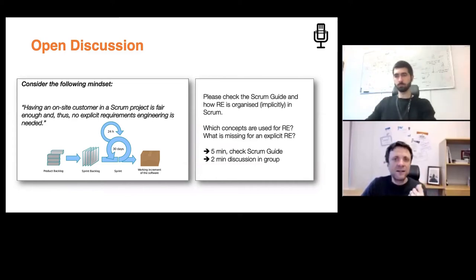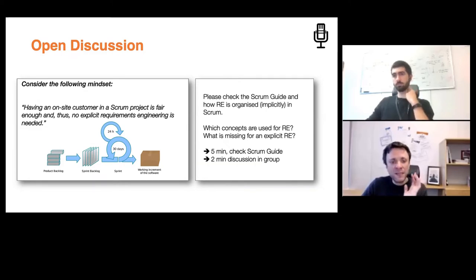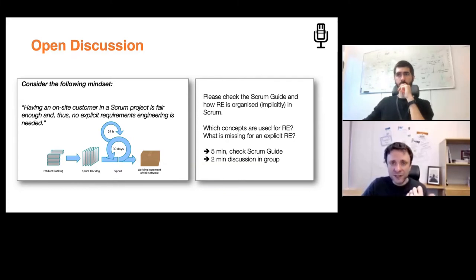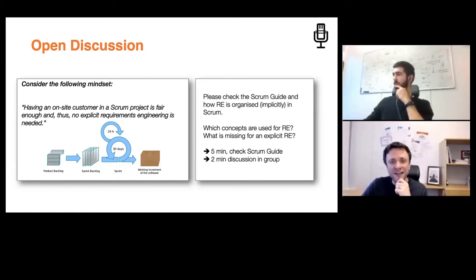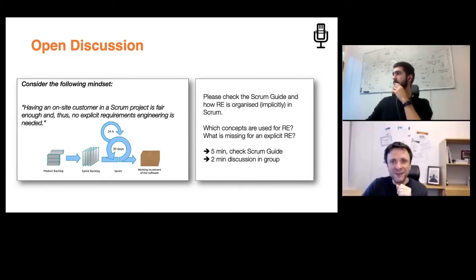I would like you to check the Scrum guide for five minutes and elaborate how requirements engineering is organized, even if only implicitly in Scrum. Which concepts are used for requirements engineering or the definition of requirements? Where do I find my requirements? And what might be missing for an explicit requirements engineering? The easiest way is to search the Wikipedia page for Scrum — there you'll find a good overview of all practices and artifacts.